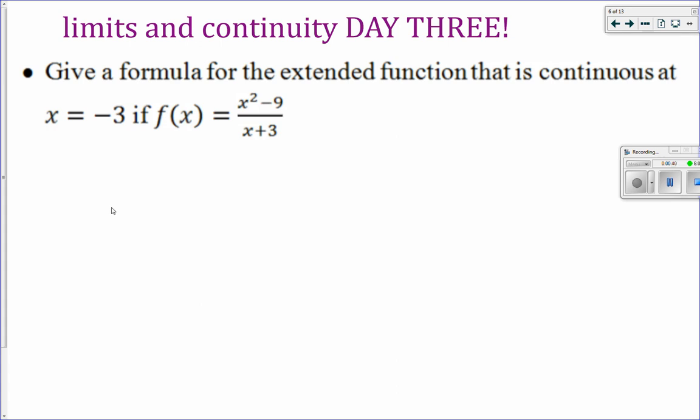So here's the issue. If I plug in this value to this function, f of negative three, I get negative three squared minus nine over negative three plus three, I get zero over zero.